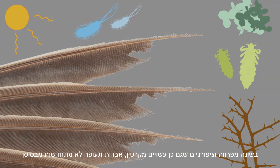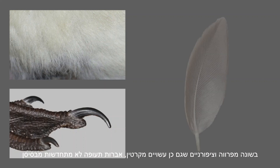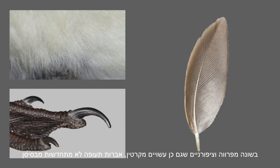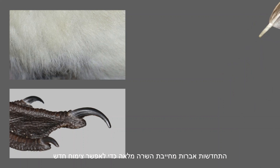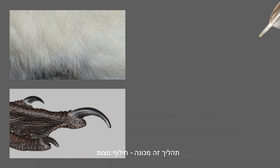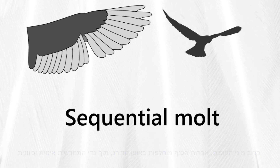Unlike other keratin structures like hair and claws, feathers cannot be renewed continuously from their base and old feathers must be shed completely before new ones develop. This process is called feather molt.